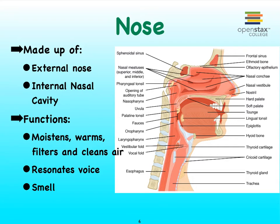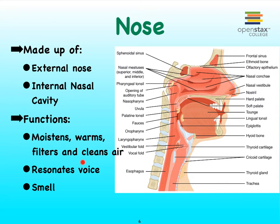Our nose is made up of the external part as well as an internal part, better referred to as the internal nasal cavity. Inside the internal nasal cavity, we have these fleshy lobes with spaces in between. The spaces we refer to as nasal meatuses, while the structures that create the separations between the nasal meatuses are called the nasal conchae. They're covered with pseudostratified ciliated columnar epithelial tissue, which provides the right histology for functions such as the moistening and warming of the air and the filtering and cleansing of the air.